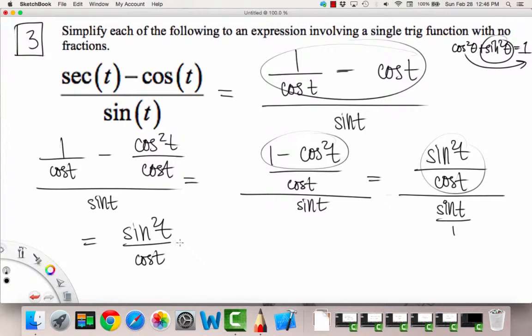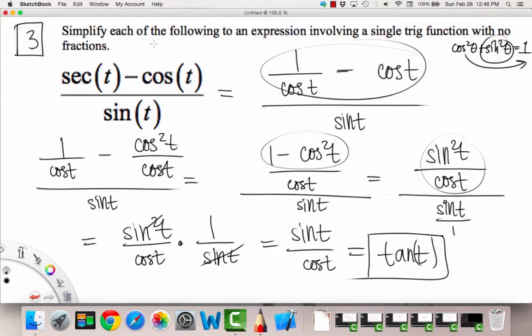So sine squared t over cosine t times one over sine t. So one of these can cancel out top and bottom, so we just get sine t over cosine t. And we recognize this as just tangent. So that's what we have obtained from this whole entire problem, is that this thing is just equivalent to saying tangent of t.